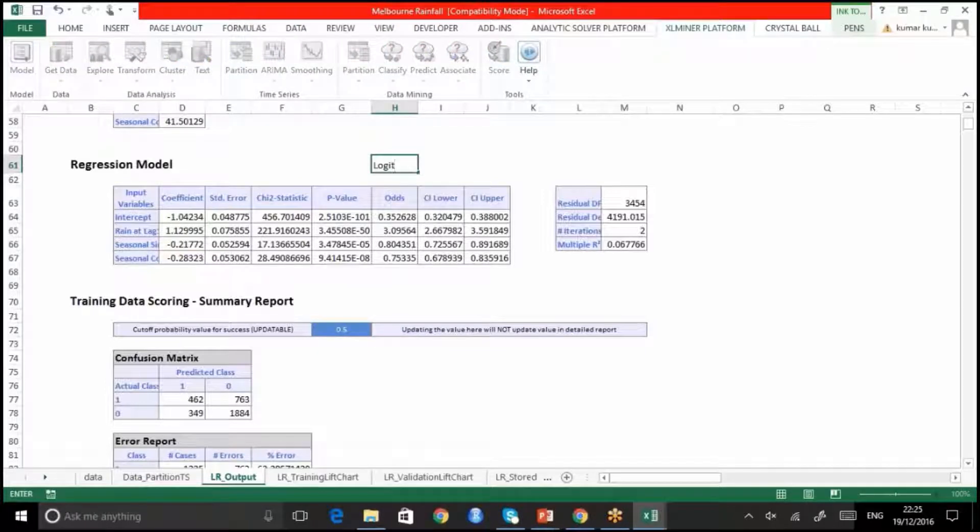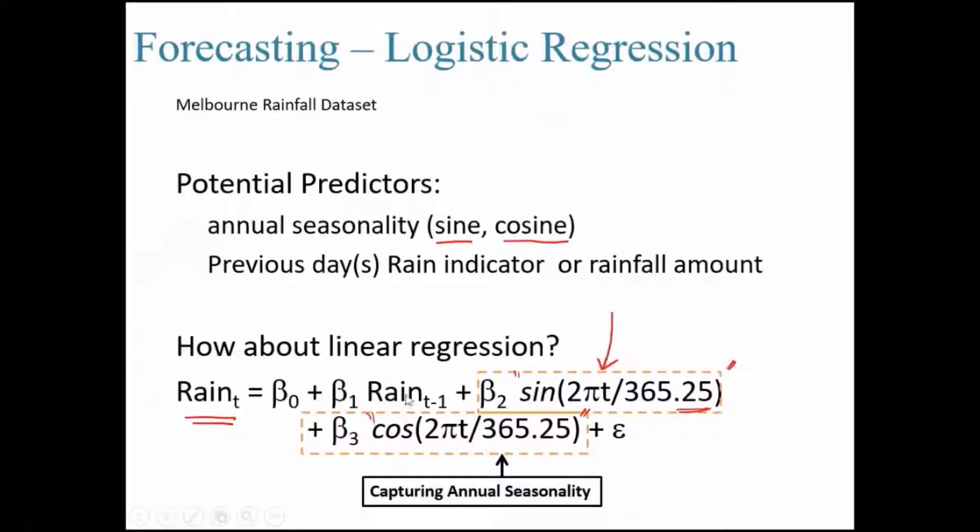Then logit of Raining is equal to -1.04 + 1.129 and you multiply it with a specific time period, whatever time period you're looking at. That is, rain at lag 1. You put that value of rain at lag 1 and -0.217 you multiply it with the function which is sine of 2πt divided by 365, this equation. Here we are replacing, we have β₀, β₁, β₂ and β₃ values.